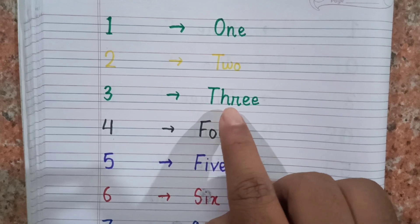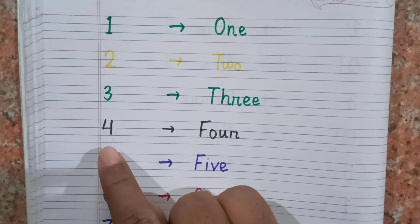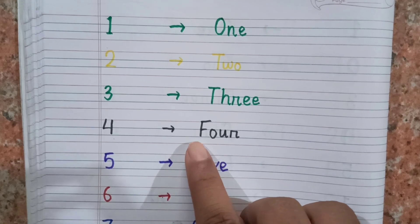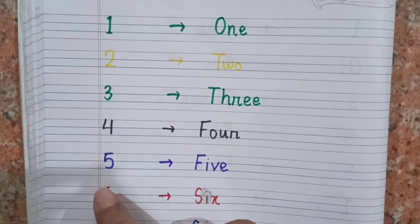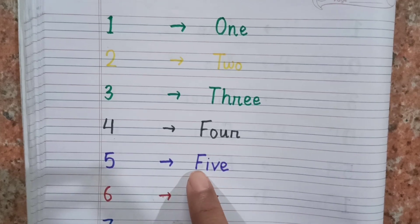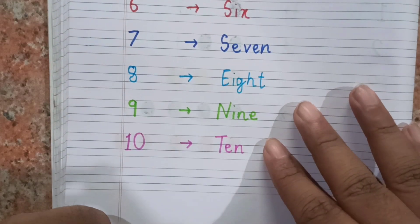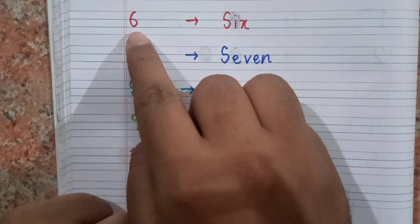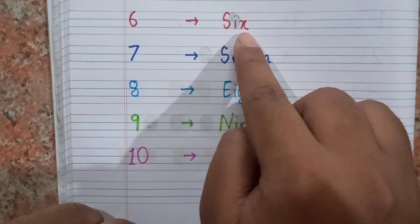The spelling of three is T H R E E. Three. After three, the next number is four, and the spelling of four is F O U R. Four. After four, the next number is five, and the spelling of five is F I V E. Five. After five, the next number is six, and the spelling of six is S I X. Six.